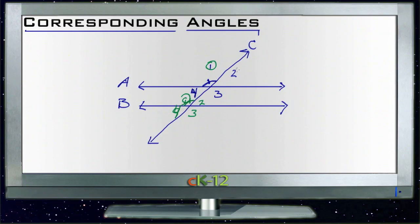And both number twos will be equal because they're both the upper right-hand angle on both pairs. The lower right-hand angle three, both of those will be equal, and four, lower left-hand angle, will be equal.